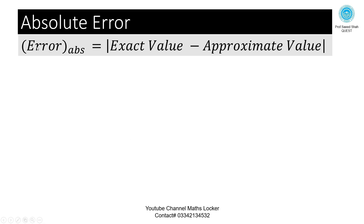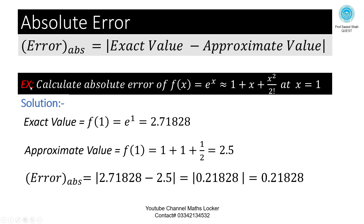Absolute error — written in notation as error_abs — is equal to the absolute value of (exact value minus approximate value). Exercise: calculate the absolute error of f(x) = e^x ≈ 1 + x + x²/2! at x = 1. Taking the exact value, approximate value, their difference, and writing in modulus form gives a positive value — this is the absolute error.